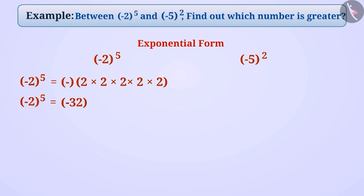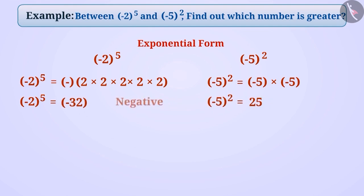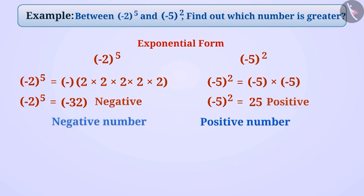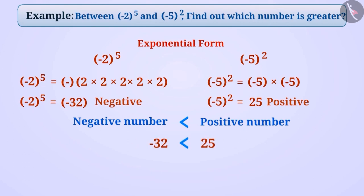Similarly, we can write minus 5 raised to the power of 2 is equal to minus 5 multiplied by minus 5, which is equal to 25. Now we see that minus 32 is negative while 25 is positive. And since positive numbers are larger than negative numbers, 25 is greater than minus 32. Hence, minus 5 raised to the power of 2 is greater than minus 2 raised to the power of 5.